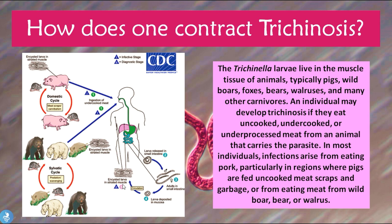The parasite infiltrates our striated muscles and this is how the human contracts the infection. There are two stages of the disease: the intestinal phase, which occurs when one ingests contaminated meat and larvae reach the intestine; and the muscular phase, which describes what happens when these larvae infiltrate human striated muscle. Let's explore this further.